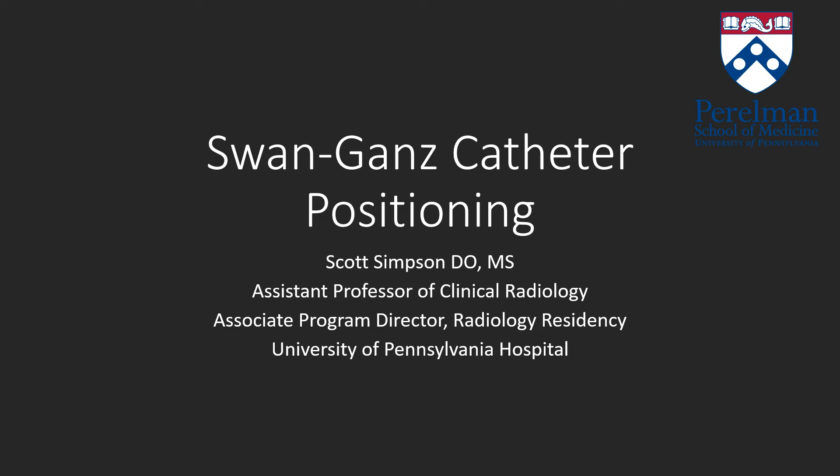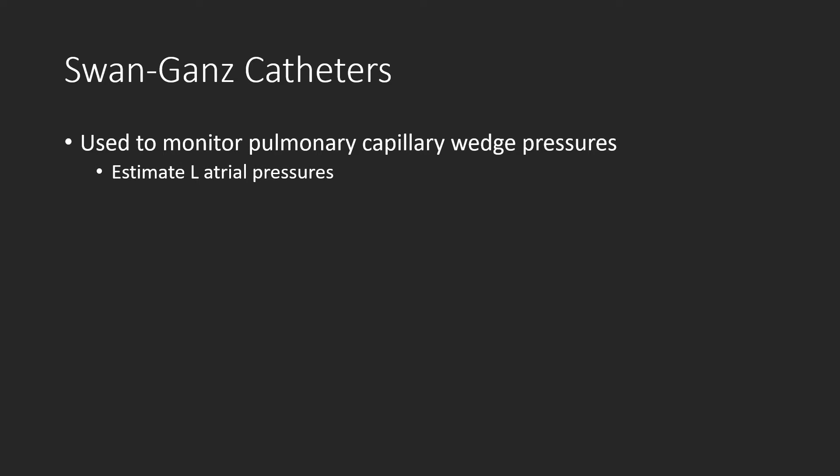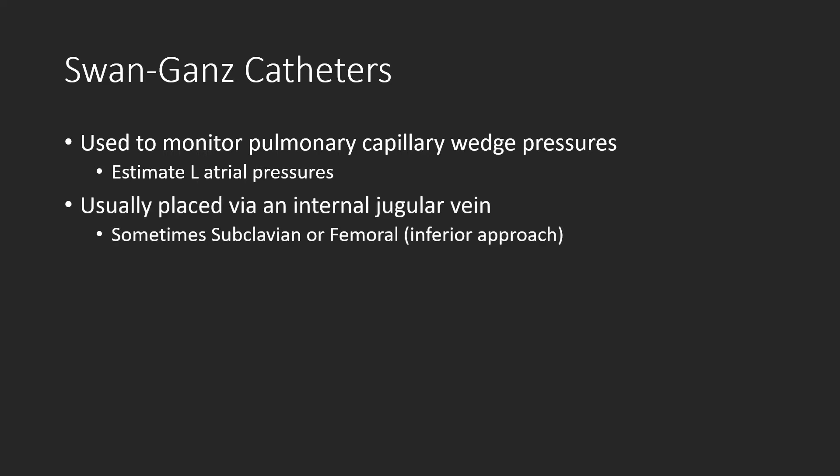My name is Scott Simpson and this lecture is on Swan-Ganz catheter positioning. Swan-Ganz catheters are used to monitor pulmonary capillary wedge pressures, which is an estimate of left atrial pressures. These are usually placed via an internal jugular vein, though sometimes a subclavian or femoral approach can be used.